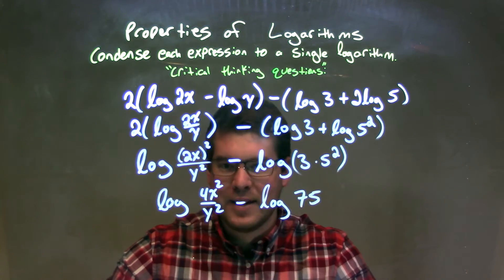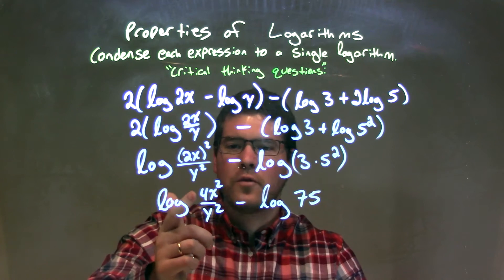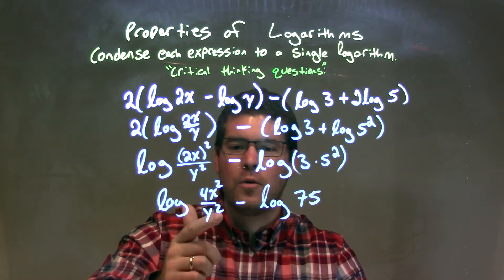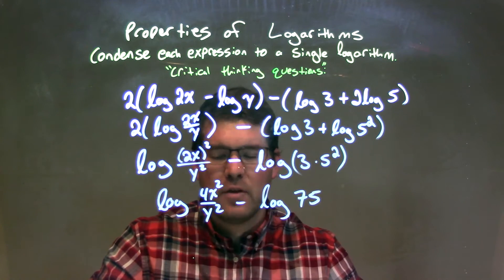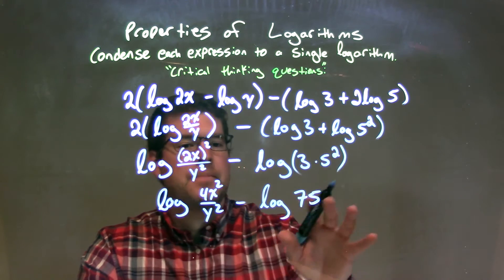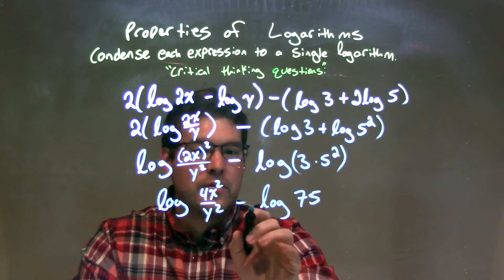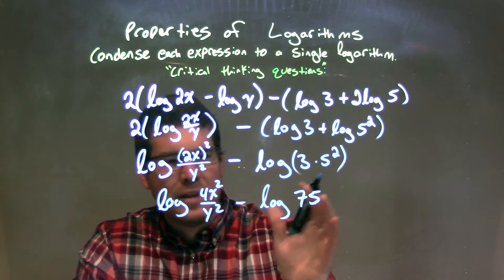So now we have, this one's tricky. Log of 4x squared over y squared minus log of 75. Well, the way I like to write this, to show what's going on, it's going to be division of the same base. But sometimes we get a little confused, well, we're dividing by dividing by dividing.